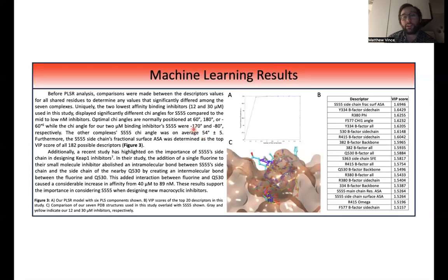So I saw that these micromolar binders were at negative 170 and negative 80, whereas the other five residues that were low to mid nanomolar were actually around 54 degrees. This is more typical of chi angles. Chi angles usually are around 60, 180, or negative 60.